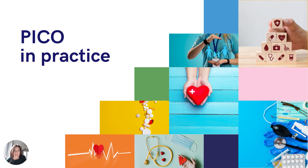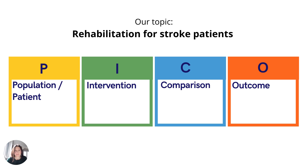Welcome to PICO in Practice. PICO is a strategy used in evidence-based healthcare to help frame and answer a clinical question. It stands for Patient or Population, Intervention, Comparison, and Outcome. Our searches generally start with something broad like 'rehabilitation for stroke patients,' but we need to narrow that down and make it more specific in order to really target our search.